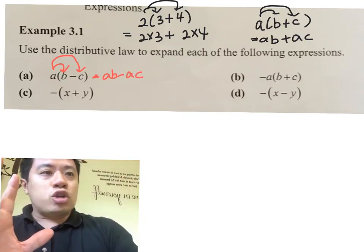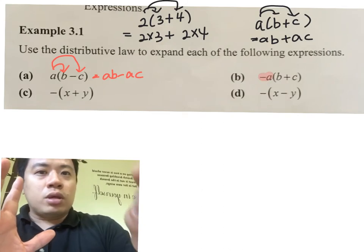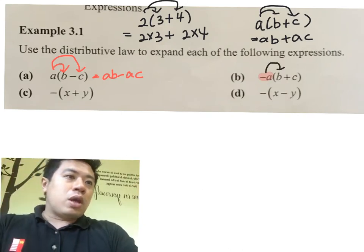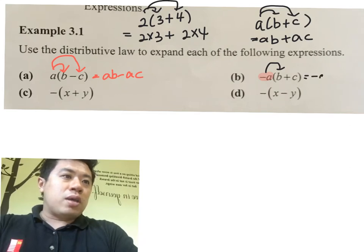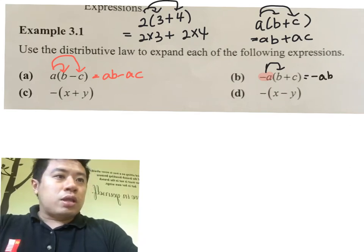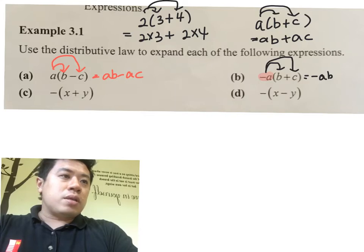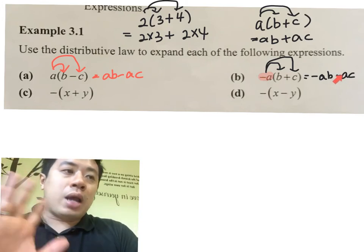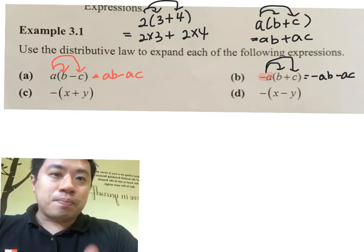For B, you're distributing negative A. So negative A combines with B to give negative AB. Negative A combines with C to give negative AC. You can write it as plus negative AC, or just summarize it as minus AC.